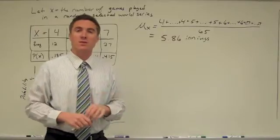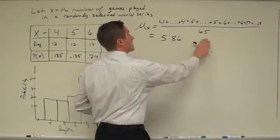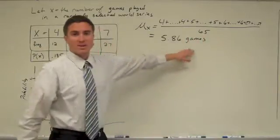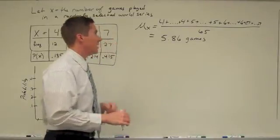Now, is any World Series going to take that long? And the answer is no. We can't have point. This isn't innings. This is games. So we can't have 5.86 games. That's not possible to have. But we're talking the long run here in probability that we have.